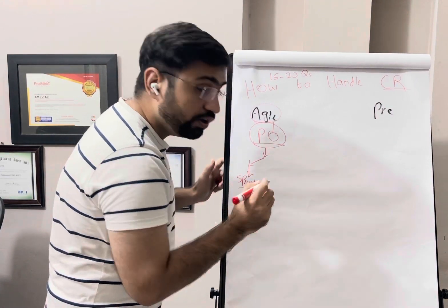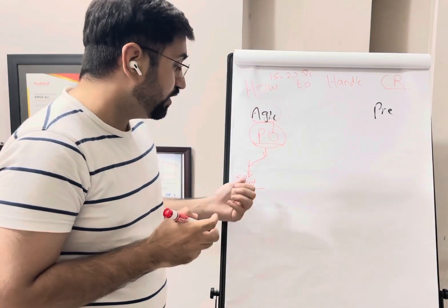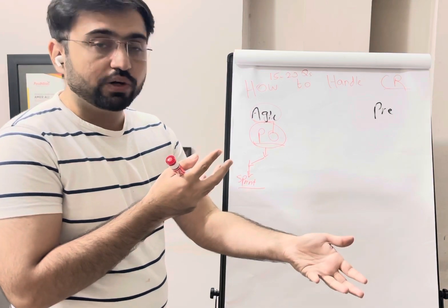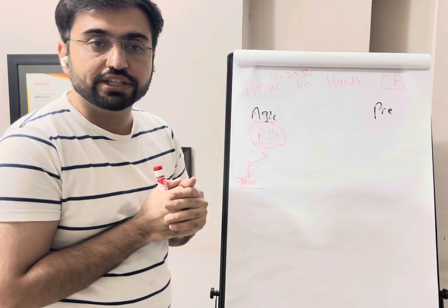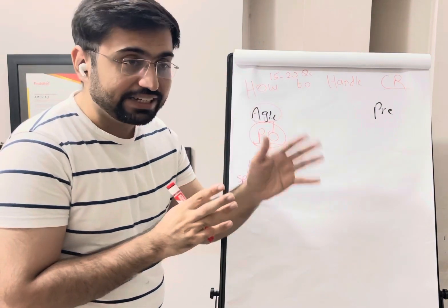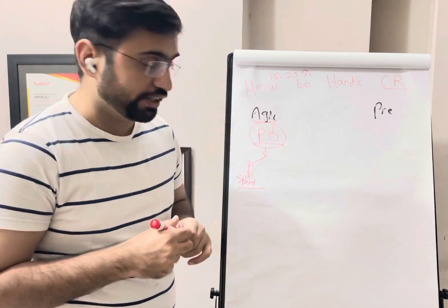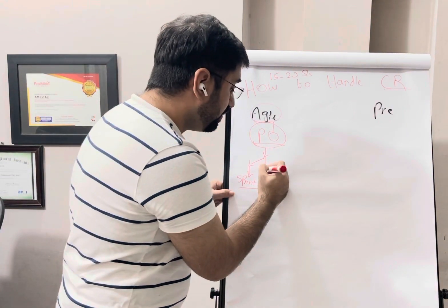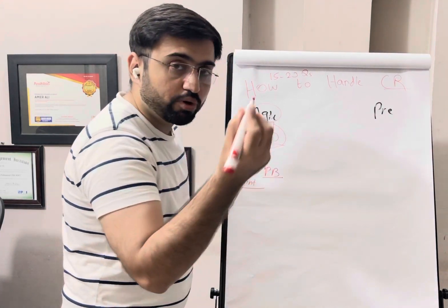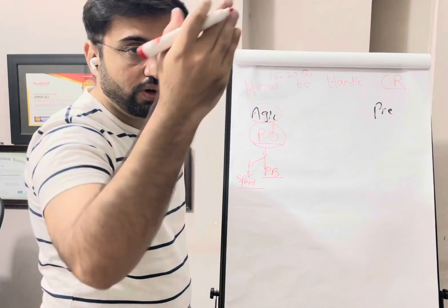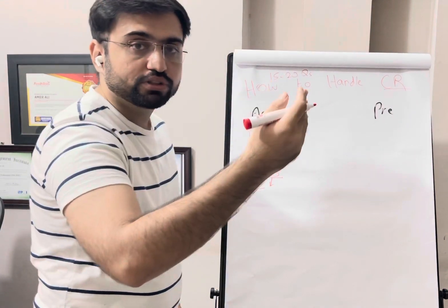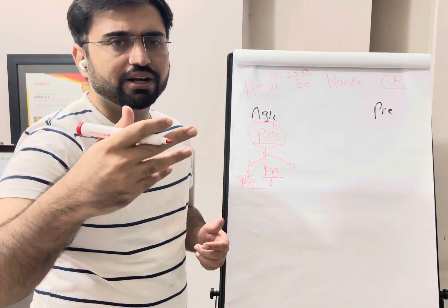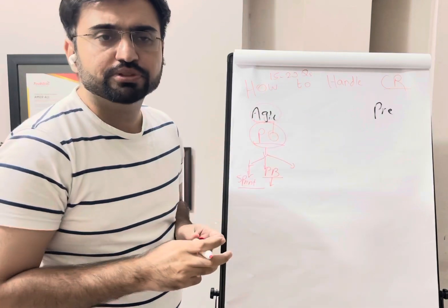Only the product owner can add anything into the current sprint. He will have a discussion and trade-off with the team, like taking out some user stories to maintain velocity, but he can put something into the current sprint backlog with team discussion. If the change can wait until after the sprint, the product owner will add it to the product backlog, refined as high priority, high value, high risk, making it the most important item. If it's low priority, it goes into the product backlog for subsequent sprints.